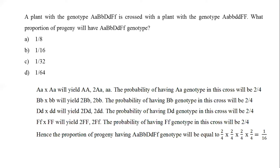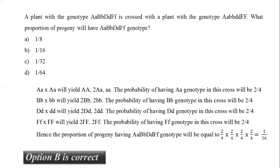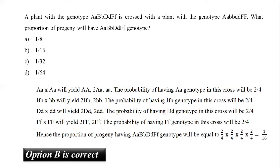Similarly, for Bb, Dd, and Ff crosses, each yields a probability of 2/4 for the heterozygous genotype. Therefore, the proportion of progeny having the genotype AaBbDdFf equals 2/4 × 2/4 × 2/4 × 2/4, which equals 1/16. The correct answer is option number B.